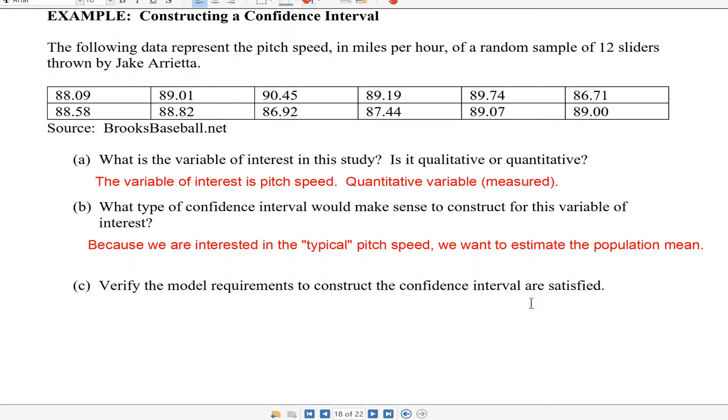The variable is quantitative, so that rules out proportion right out of the gate. But just because it's quantitative doesn't mean that this is what we're estimating. You could want to estimate the population standard deviation for some reason. Maybe you were wondering, how consistent is the speed of the pitch? In baseball, you want your pitch speeds to be less consistent rather than more if you want to be an effective pitcher, to keep the hitters off balance.